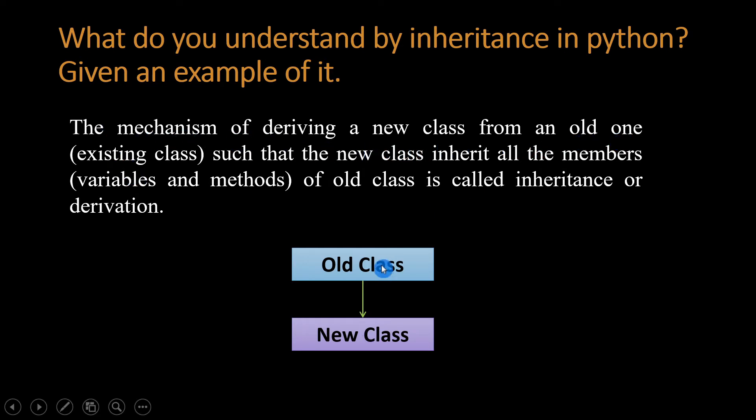From the old class, such that the new class inherits all the member variables and methods of the old class. All members, methods, and variables of the old class are inherited by the new class. This is called inheritance or derivation.